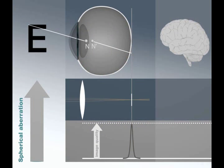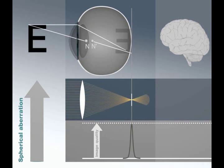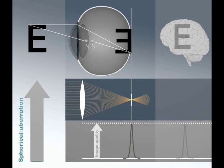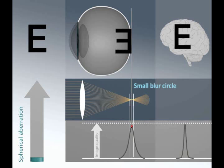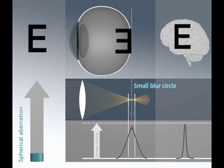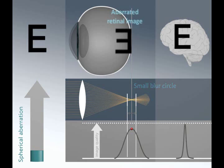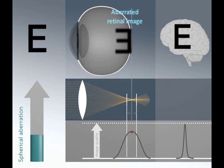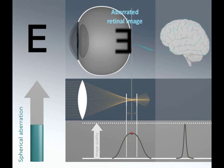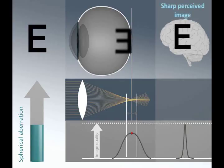A small amount of spherical aberration results in rays of light focusing in a small blur circle rather than a single point, meaning that the retinal image will be slightly spherically aberrated. However, due to the natural ability of the visual cortex to process spherical aberration and enhance edge detection, the image in the mind is perceived as a sharp image.